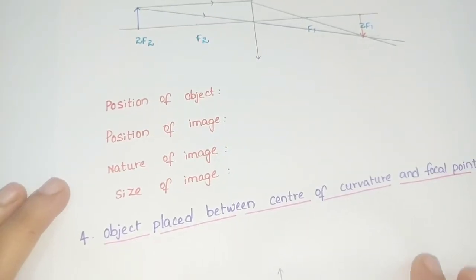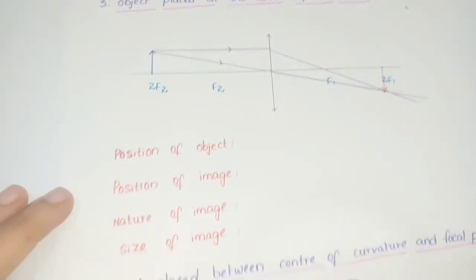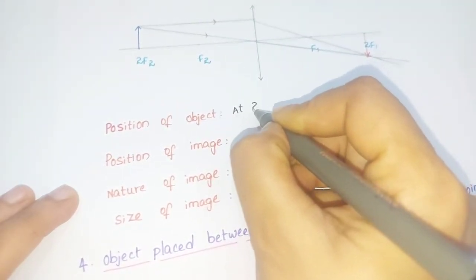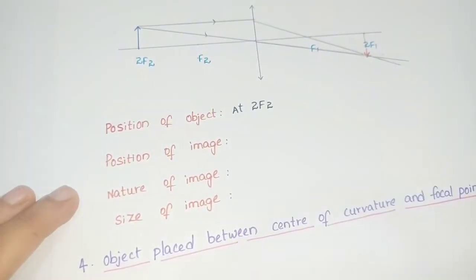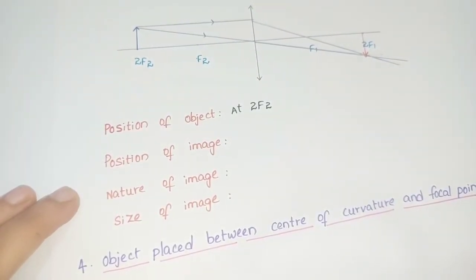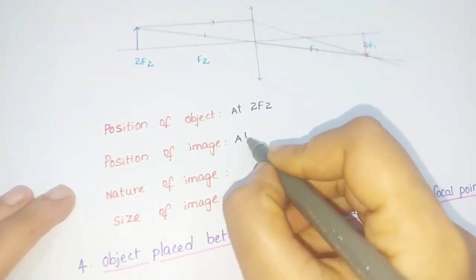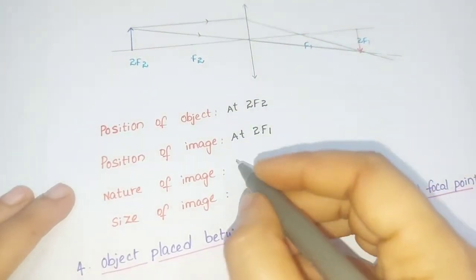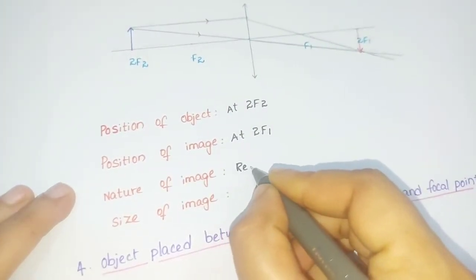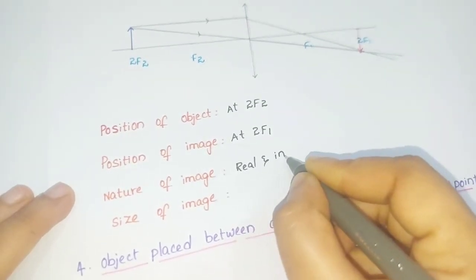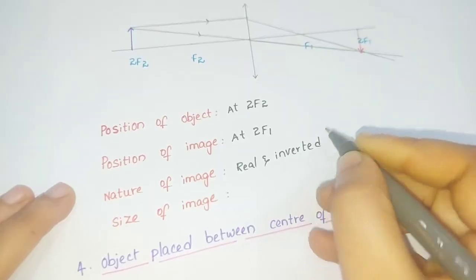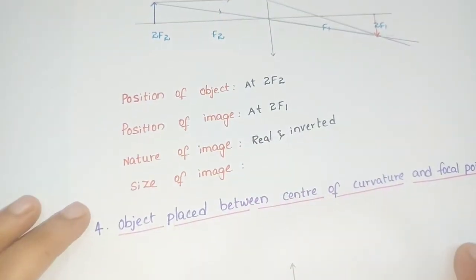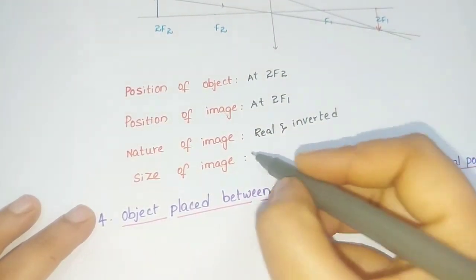Now we write the characteristics of the image. Position of object: at the center of curvature, 2F2. Position of image: the image is formed at the center of curvature on the other side, at 2F1. Nature of image: real and inverted. Size of image: the size of the image is the same as the size of the object — same size.